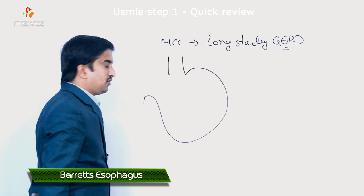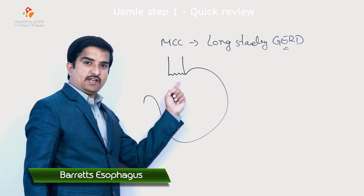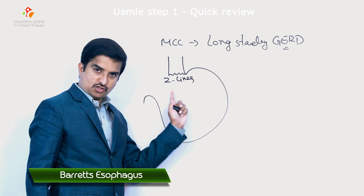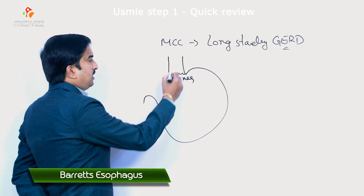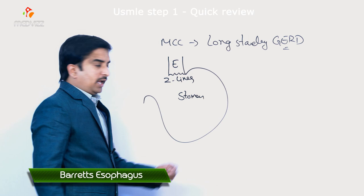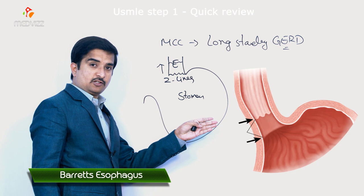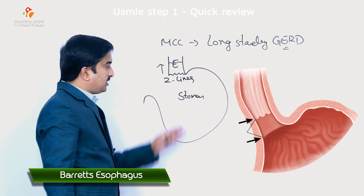At the gastroesophageal junction, one will find Z-lines. The Z-lines are also called the squamocolumnar junction — the junction between the esophagus and the stomach. If the Z-line is elevated towards the distal end of the esophagus, as you can see in this picture, there will be columnar epithelium extending to the distal end of the esophagus.